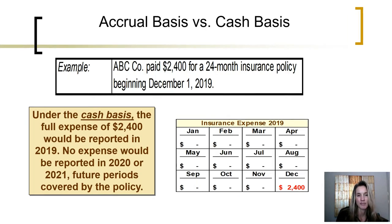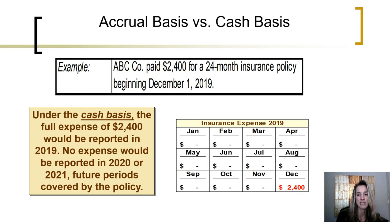As an example, if ABC paid $2,400 for a 24-month insurance policy beginning December 1st of 2019, if we were following the cash basis of accounting, the full expense of $2,400 would be recorded and reported as an expense in December of 2019. That means no expense related to insurance would be reported during the years 2020 and 2021.